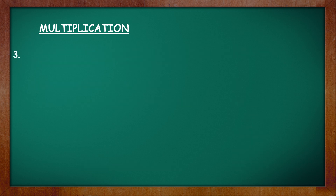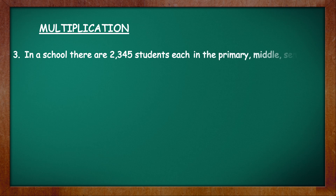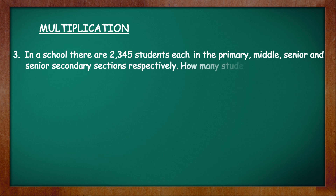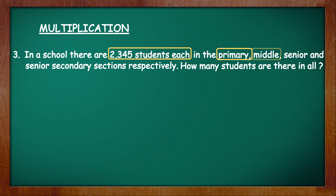Question number 3. In a school, there are 2345 students each in the primary, middle, senior, and senior secondary sections respectively. How many students are there in all? In this question, we know the number of students in each section. The different sections are primary, middle, senior, and senior secondary — that is four sections in all. In order to find the total number of students, we have to multiply the number of students in each section by the number of sections.